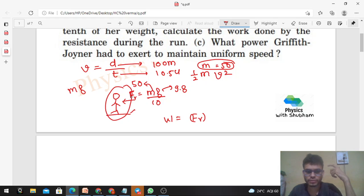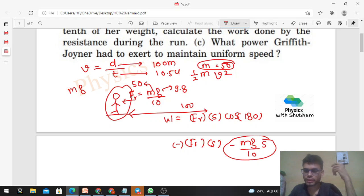Once we get the value of F, resistive force, then the work done by the resistive force will be that force into the displacement of this athlete, which will be 100 meter. So s is given 100 and cos of theta. Now what is the angle between the force and the displacement? That is 180 degree, so cos of 180 degree. Ye kitna hoga? Minus 1. So Fr into s into minus 1. Fr kitna hai? mg by 10. mg by 10 into s into minus 1.